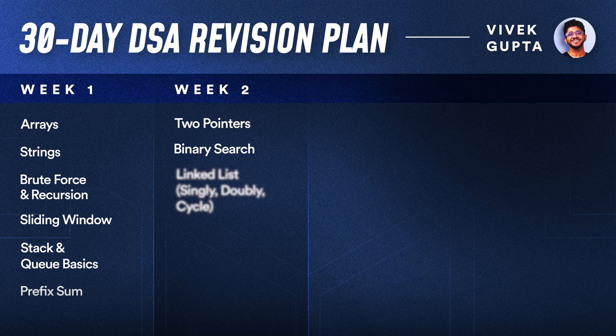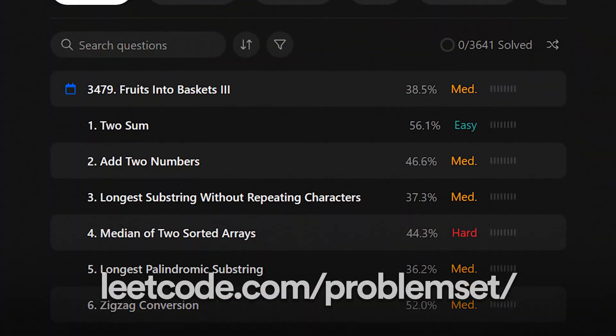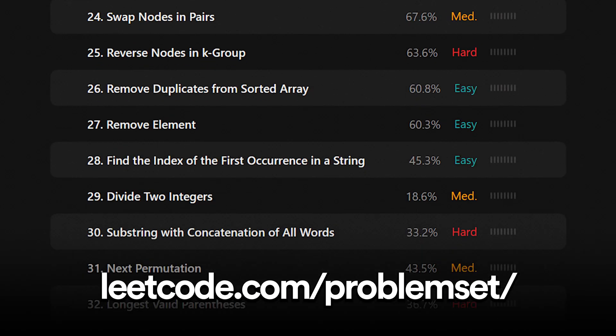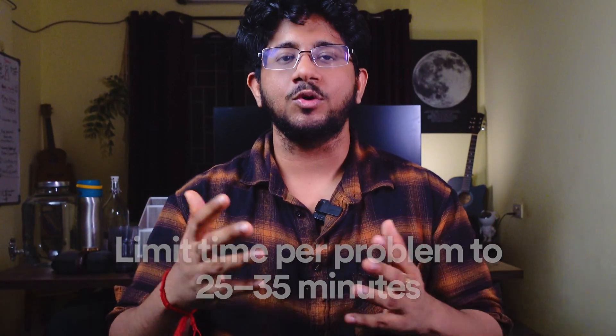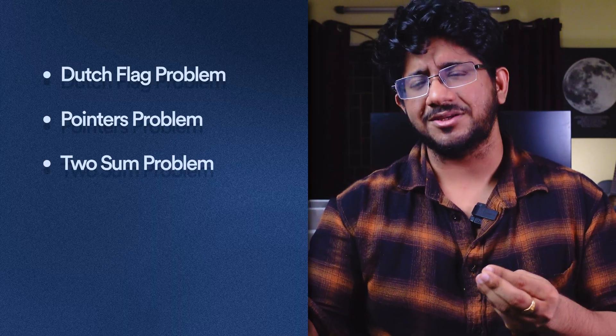In week two, we'll cover the most important topics asked in interviews: two pointers, binary search, linked lists, stacks, queues, hashmaps, hashsets, and hashing in general. Pick any platform like LeetCode and solve two medium problems plus one easy problem per topic. Time yourself — don't spend more than 25 to 35 minutes on any problem, then look at the idea, understand it, and move on. Note common patterns like the Dutch flag problem, two-pointer problems, two-sum and its three-sum/four-sum variations.